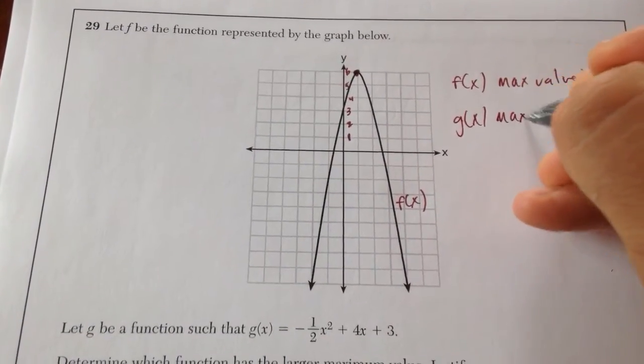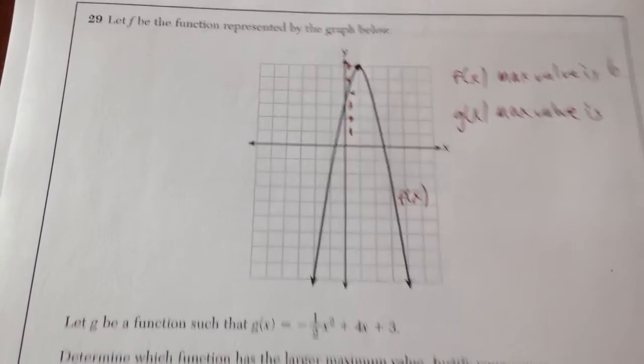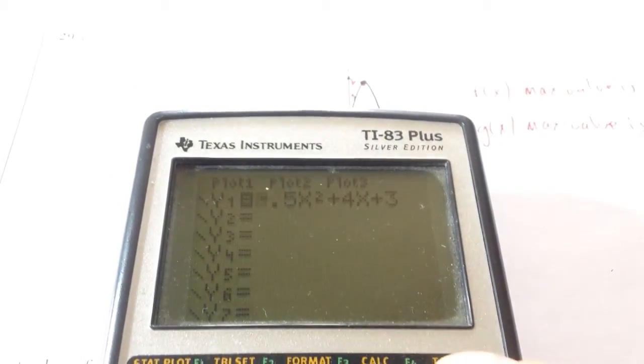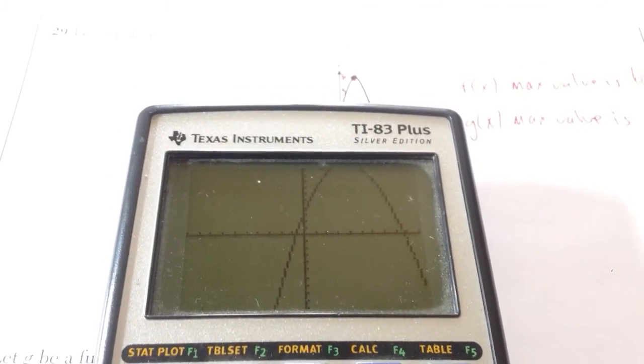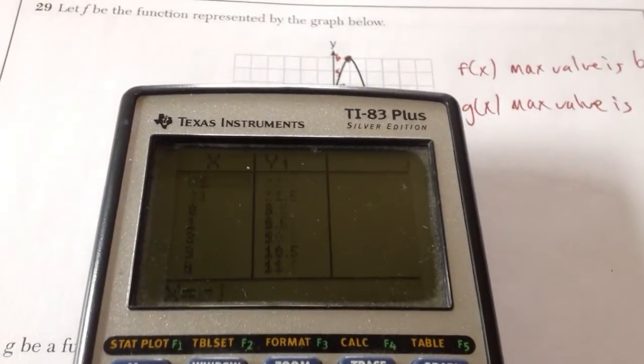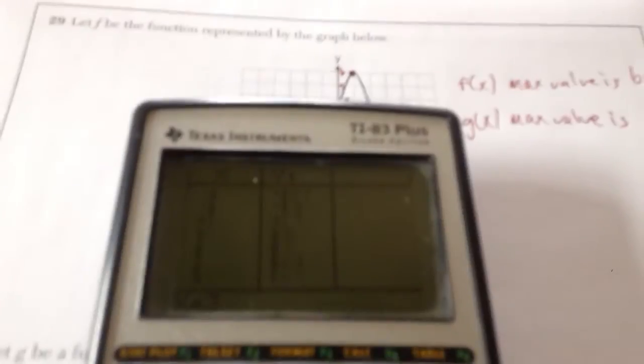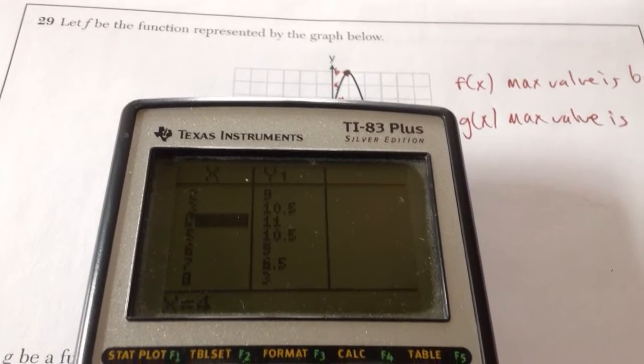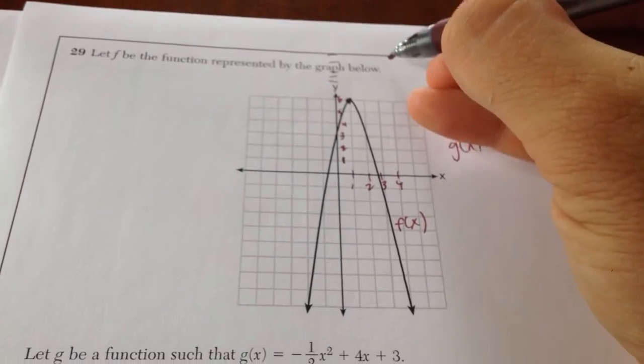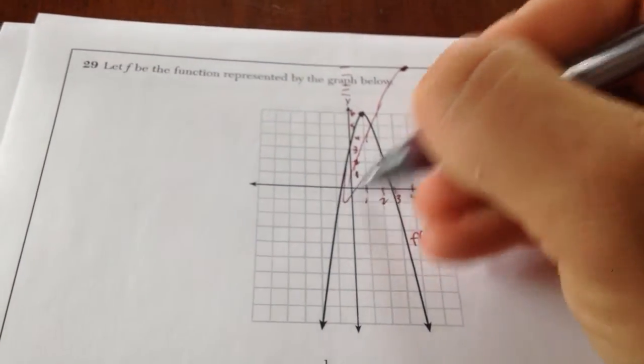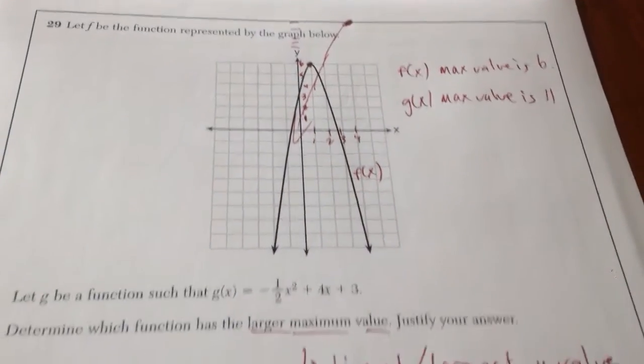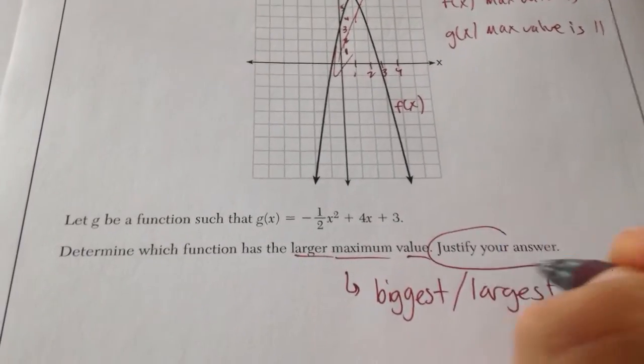g of x's max value is what I'm going to do is put this equation into my calculator in y equals. I'm going to graph. And then I'm going to go to table. And I'm going to look at what my maximum y value is. And if you notice at 4 my highest value is 11. So if this is 6 technically the g of x's is way up here at 11. So this maximum value is 11.